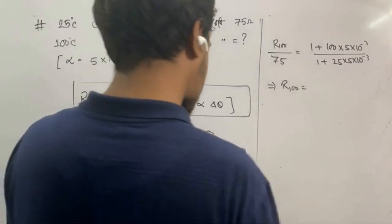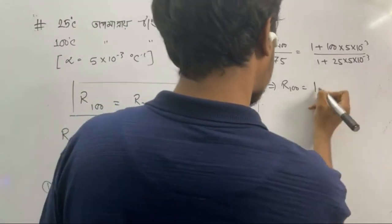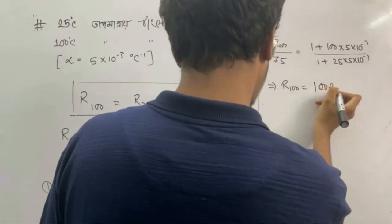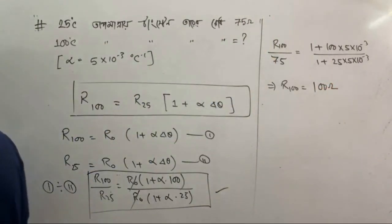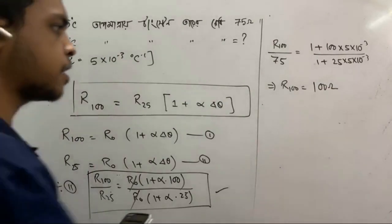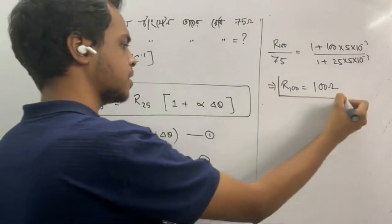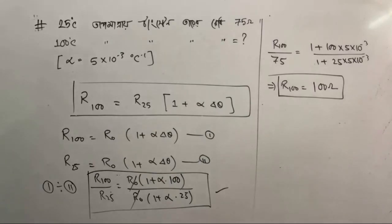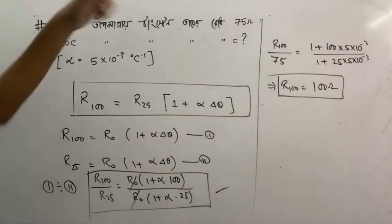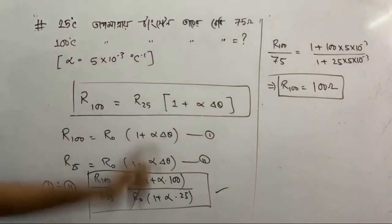The answer equals 100 — perfectly. So at 25°C the resistance is 100 ohms. Next we move to the whole section on parallel combinations.